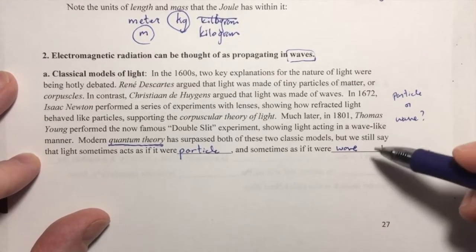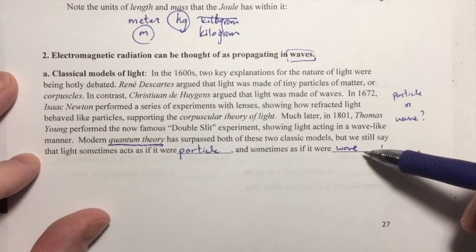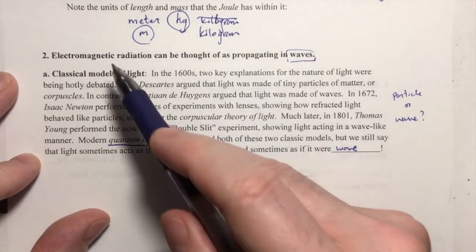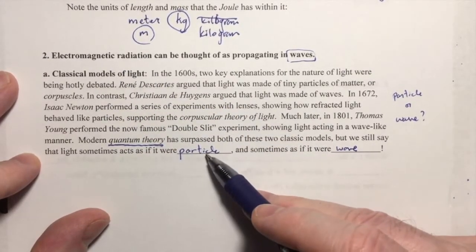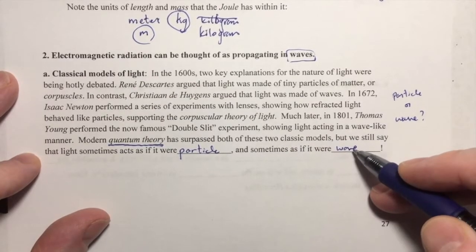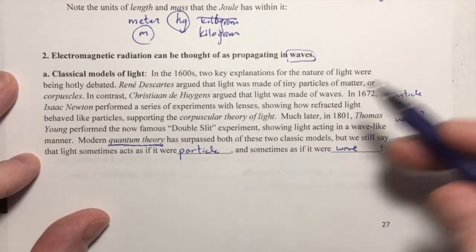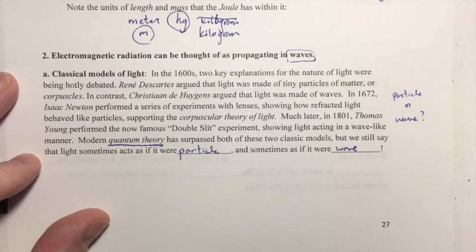These are just models, different ways of thinking about, different ways of conceptualizing electromagnetic radiation. We can think of it as particles, we can think of it as waves, and then we can use modern quantum theory.